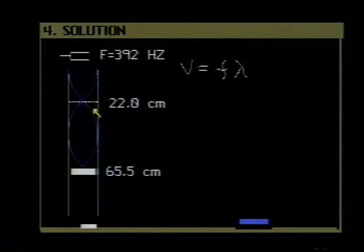At the first resonant point, the length of the tube is equal to one quarter wavelength, where we have a node at the closed end and an antinode at the open end. At the second resonance point, a standing wave in the tube looks like this, where again we have a node at the closed end and an antinode at the open end. The length of the tube here is equal to three quarters of the wavelength.